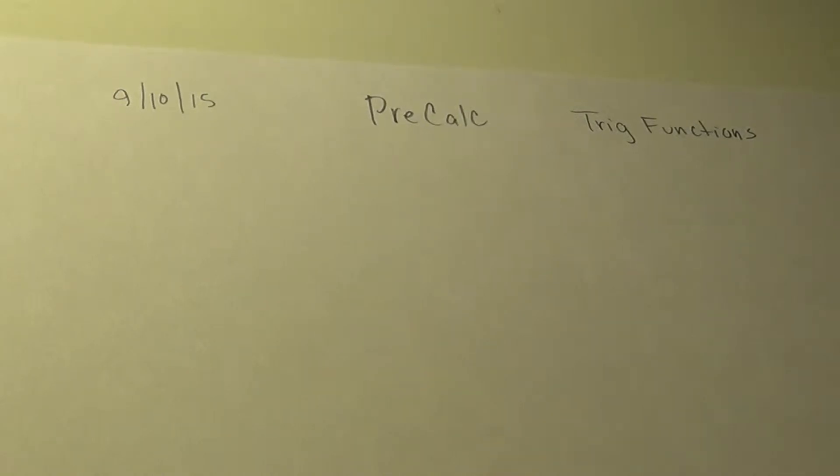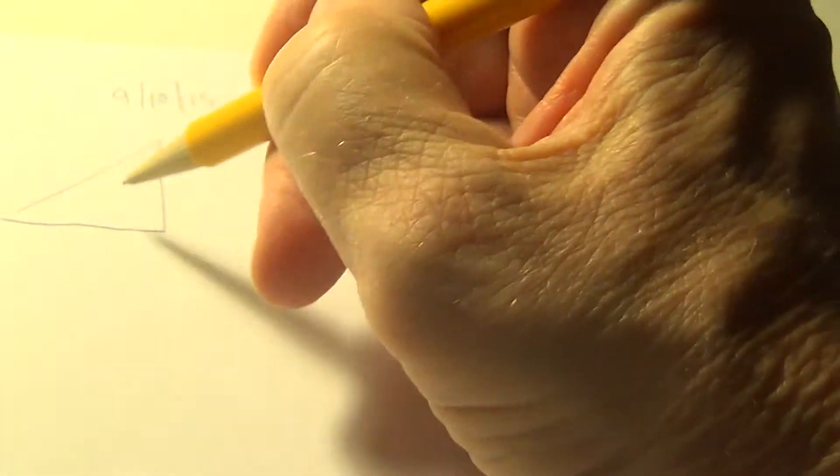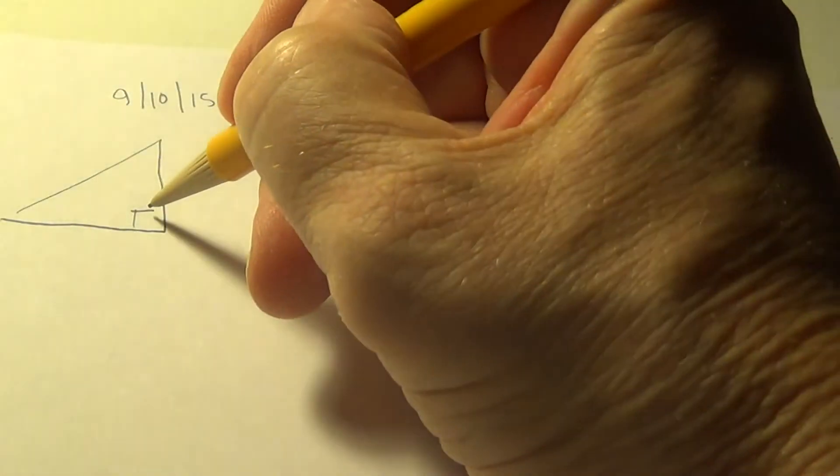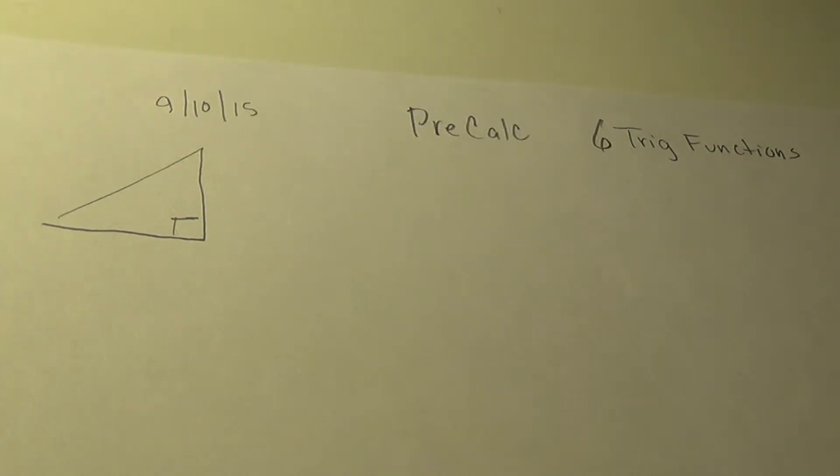Alright, we become real trig students today because we are going to learn or relearn the trig functions. You should have been introduced to them in Algebra 2 and Geometry, but I'm going to start from scratch and refresh our memories. There are six trig functions and we're going to learn all six of them today and use some special triangles. Before you use any trig function, you have to understand that you have to have a right triangle. A right triangle is the basis of a lot of trig.